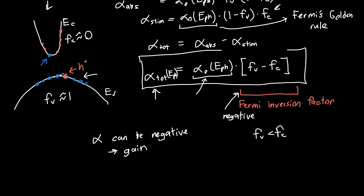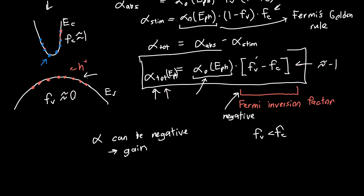But if something happens — like we've artificially excited the semiconductor with a bunch of photons, giving us a bunch of electrons in the conduction band and a ton of holes in the valence band — then our valence band states are very likely to be empty, so FV ≈ 0, and FC ≈ 1 for all the energies we're interested in. Now our absorption will be negative because FV minus FC will be approximately negative one. In the next couple of videos, we just need to figure out FC and FV and their dependence on the photon energy — expressing E1 and E2 in terms of the photon energy.